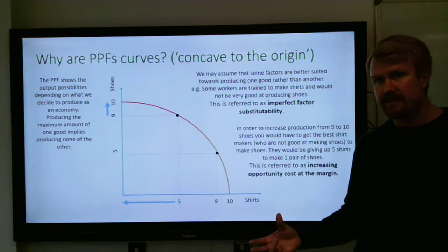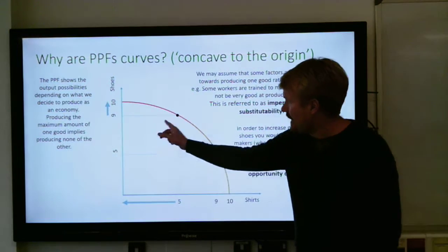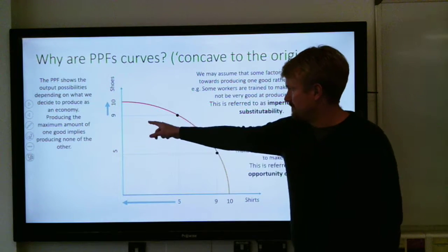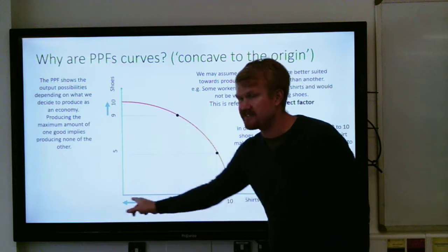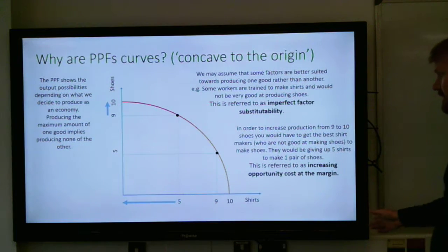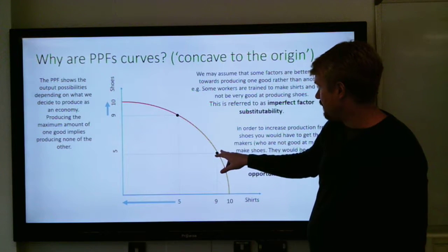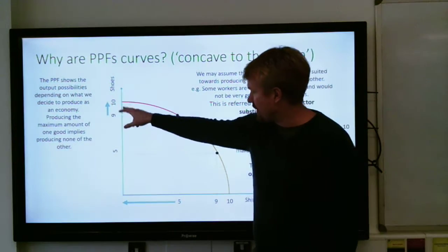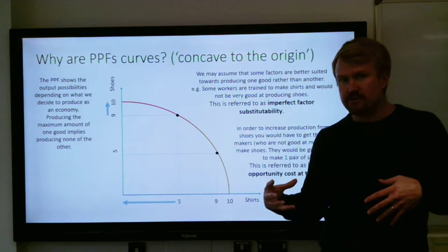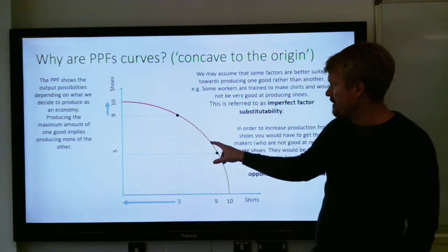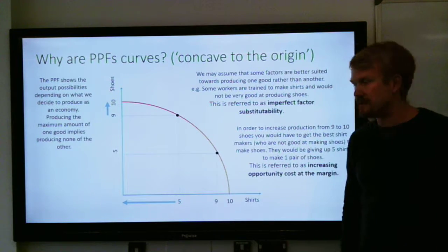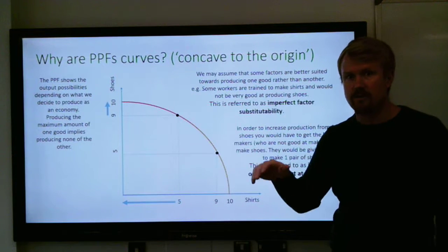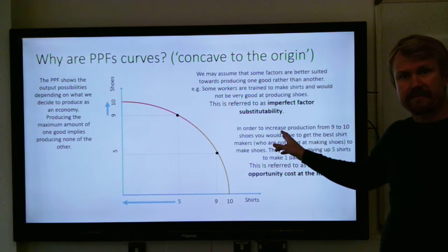This means there is increasing opportunity cost at the margin. As you go higher and higher on the curve, the opportunity cost increases. To go from nine to ten shoes, the opportunity cost is five shirts — a much higher opportunity cost than lower on the curve, where making four shoes only gave up four shirts. So here it was a one-to-one relationship, but up there it's a one-to-five relationship. That's the reason why it's concave to the origin — because of imperfect factor substitutability.